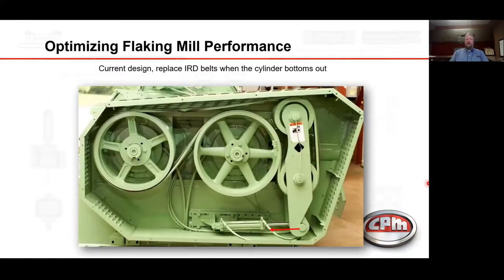This picture shows the inner roll drive side — our current design. Our long span is on top, so we're pulling back on this arm to tension the long span. When this arm bottoms out on the hydraulic cylinder, it's time to change belts. We always want to change belts as a full set.